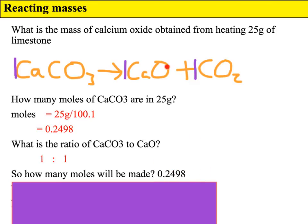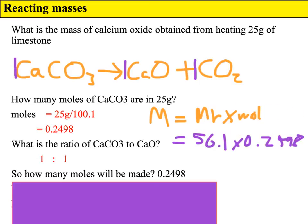Then, I've got 0.2498 moles of the calcium oxide. And now I've just got to use those moles along with the MR of calcium oxide to work out the mass. So mass equals MR times moles. We work out the MR - it turns out as 56.1 times the moles, which is 0.2498. So we've got 56.1 times 0.2498, so that equals 14.0 grams.